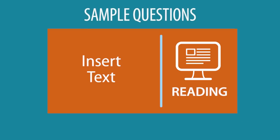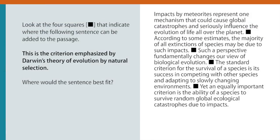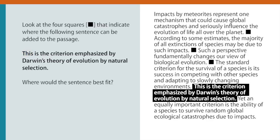Here's a sample insert text question and the corresponding paragraph. Note that the sentence says 'this is the criterion,' and it's important to look for pronouns. The pronoun here is 'this,' so there's probably something about a criterion in the previous sentence. If we insert the sentence at square number four, the previous sentence talks about the standard criterion, and the following sentence says 'yet an equally important criterion,' so that's a likely choice. And when you read those sentences together, the sentences do flow logically, so this is the correct answer.